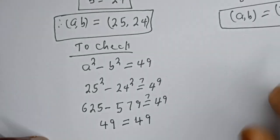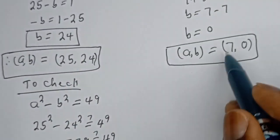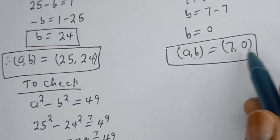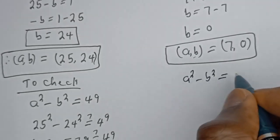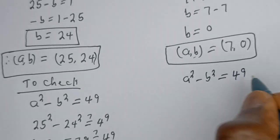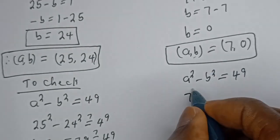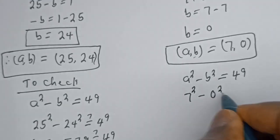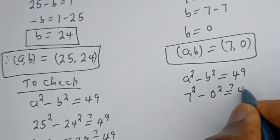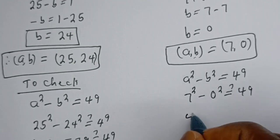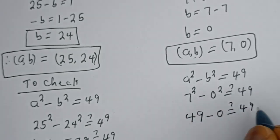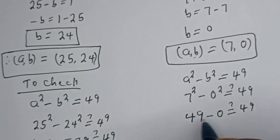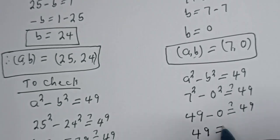For the second case, using A equals 7 and B equals 0: A squared minus B squared equals 7 squared minus 0 squared, which is 49 minus 0, equals 49. So 49 equals 49, which is also true.